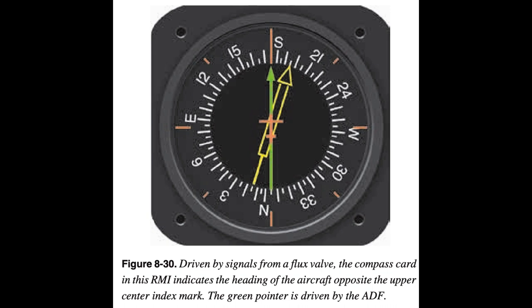It is important to check the indications frequently — approximately every 15 minutes — and reset the heading indicator to align it with the magnetic compass when required. Adjust the heading indicator to the magnetic compass heading when the aircraft is straight and level at a constant speed to avoid compass errors. The bank and pitch limits of the heading indicator vary with the particular design and make of instrument. On some heading indicators found in light aircraft, the limits are approximately 55 degrees of pitch and 55 degrees of bank. When either of these attitude limits is exceeded, the instrument tumbles or spills and no longer gives the correct indication until reset.